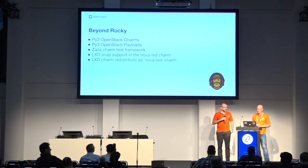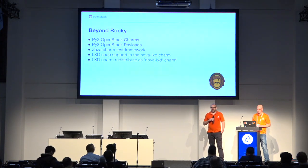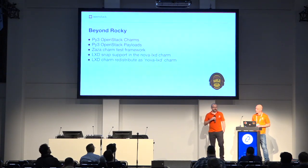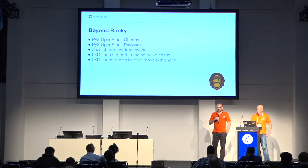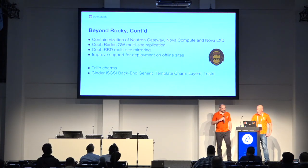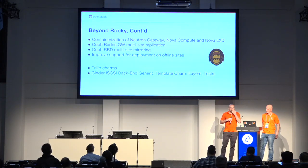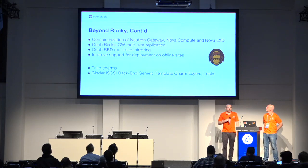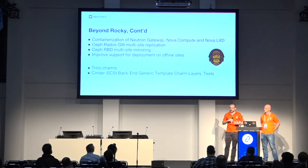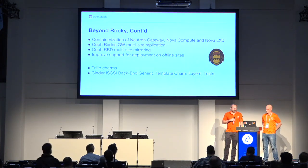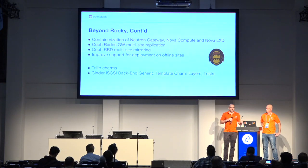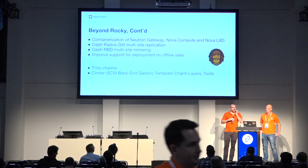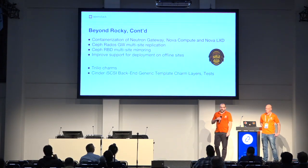We're converting all our functional testing over to a framework called Zaza, which was partly ignited by the Python 3 work, since our existing functional test framework is Python 2 only. Zaza is a new library to test any charm — it's not specific to OpenStack even though we've branded it as that. On the LXD side of things, we have a charm called LXD that's a subordinate for the Nova Compute charm that allows you to spin up system containers with LXD from Nova. We'll rename that this cycle to the Nova LXD charm, because there's another LXD charm coming that's a more generic use case for clustering.